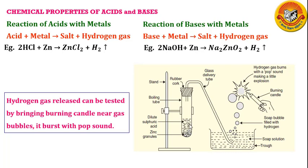We pass the gas bubbles formed through a soap solution in a trough. Gas-filled bubbles form in the soap solution and rise into the air. When we bring a burning candle near the gas-filled soap bubbles, the gas burns with a pop sound. Only hydrogen gas burns making a pop sound, showing that hydrogen gas is released in this reaction.